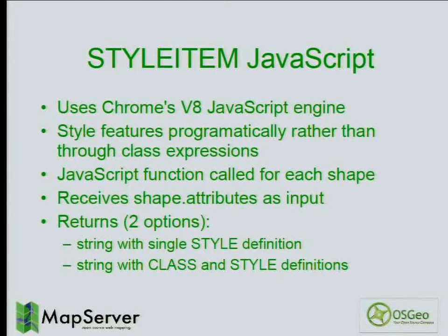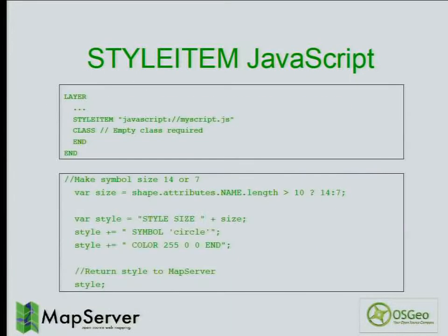styleItem JavaScript works similarly to styleItemAuto: you write a JavaScript function that looks at the attributes of each shape, and returns a class definition that MapServer uses to render that single shape before moving to the next. You can return either a single style definition or a class with multiple styles. In your layer, you add styleItem javascript:// followed by your script name, perform your calculations in code, create a style definition, and return it — MapServer uses that for rendering.